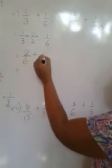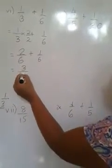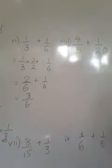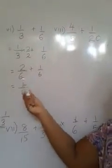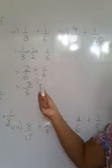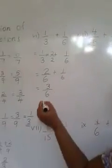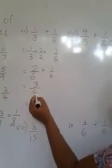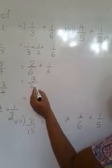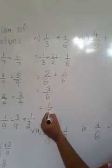Then 2 added 1 is 3 over 6. Why did I add 2 and 1? Because the denominators are same. So we can add the numerators. Now I can write the final answer. Can simplify by 3. 3 times 1, 3 times 2.